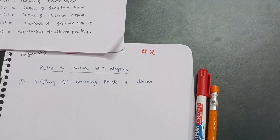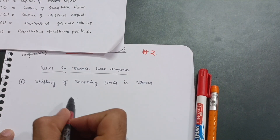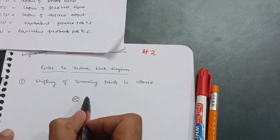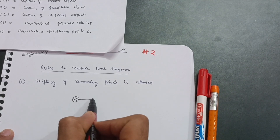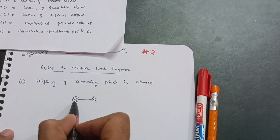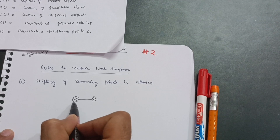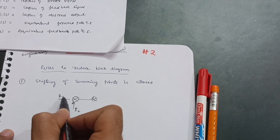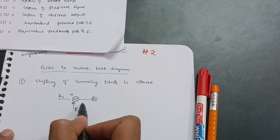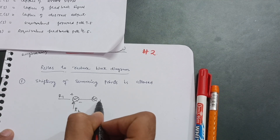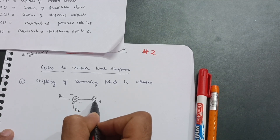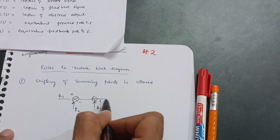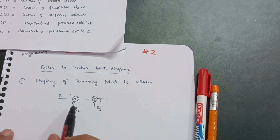The first rule: shifting of summing points is allowed. For example, here is a summing point and another summing point. Suppose R2 is the feedback, R1 is the reference input (positive), this is the negative feedback, and this is positive, and suppose R3 is the feedback over here.